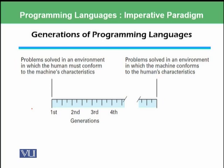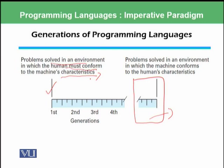First of all, we should look at generations of programming languages from the first generation up till now and where we are moving. The difference between the first generation and today's generation is that previously, problems were solved in an environment where humans must conform to the machine characteristics. However, we are moving toward a direction where the machine conforms to human characteristics — what humans actually need.